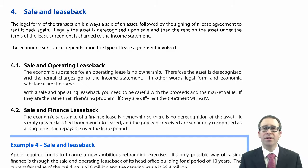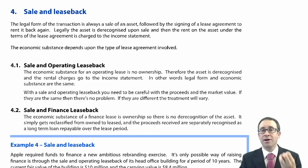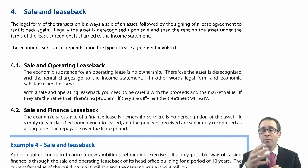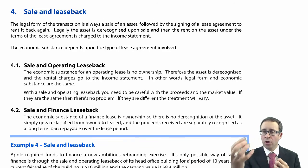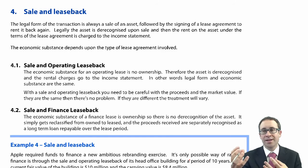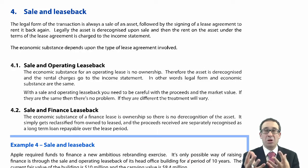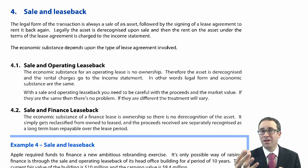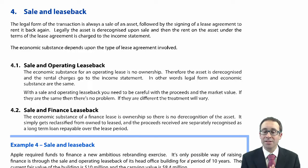Under a sale and operating leaseback, when you sell the asset it's gone, and when you lease it back under an operating lease you don't have the risks and rewards of ownership. So once it's sold and gone, under the operating lease, in substance it's still no longer your asset. The legal form and the economic substance are exactly the same - the sale has happened and you lease it back under a normal lease rental agreement.